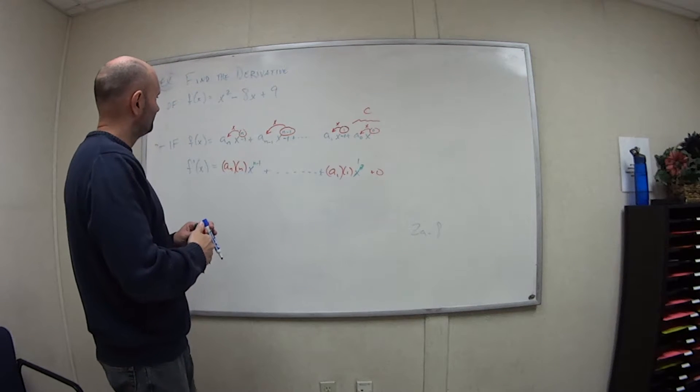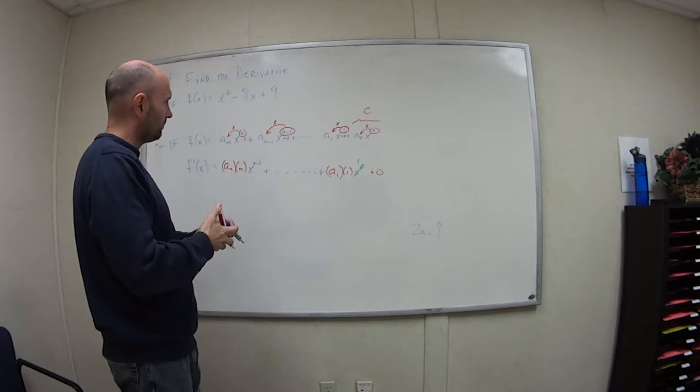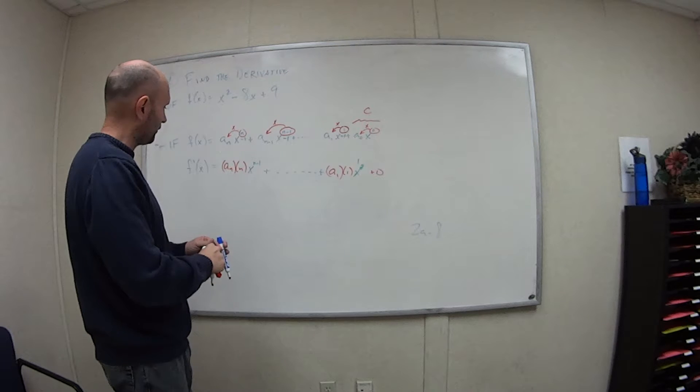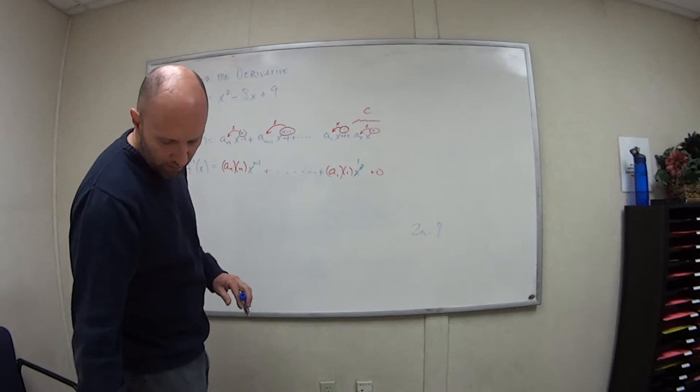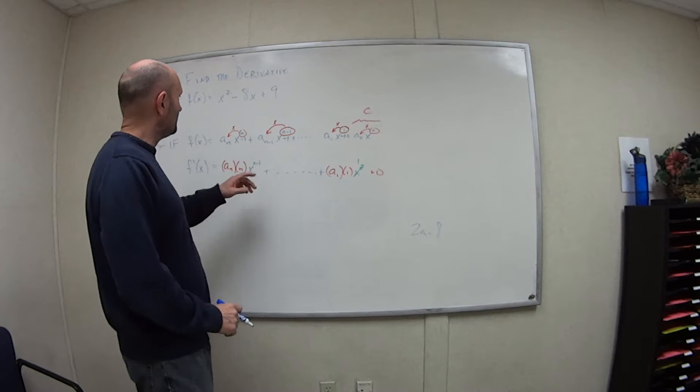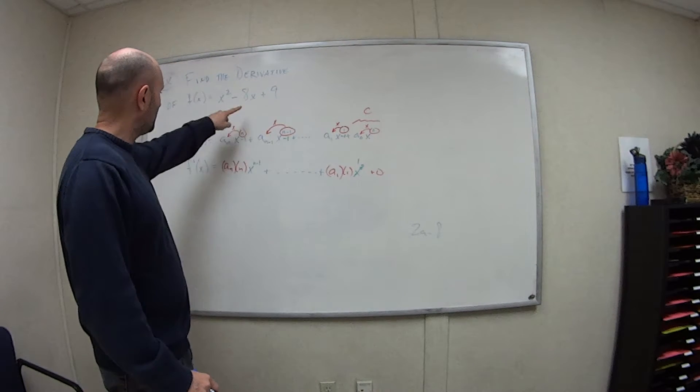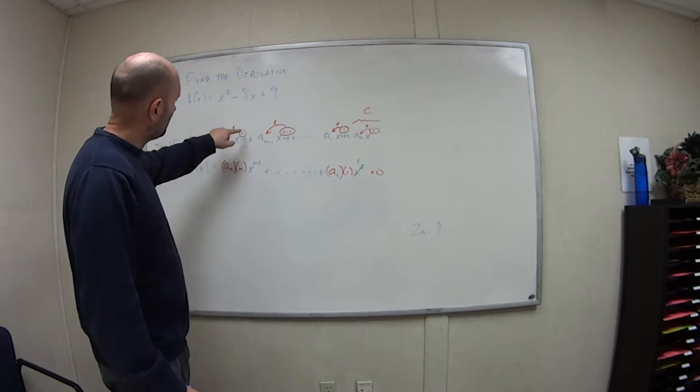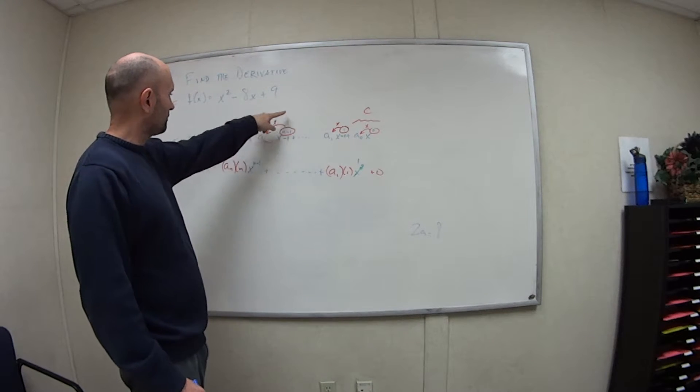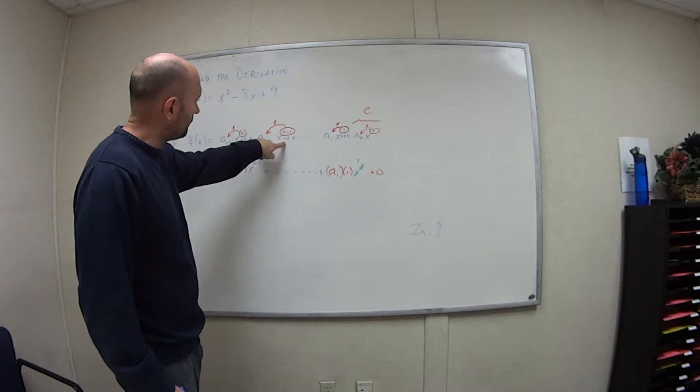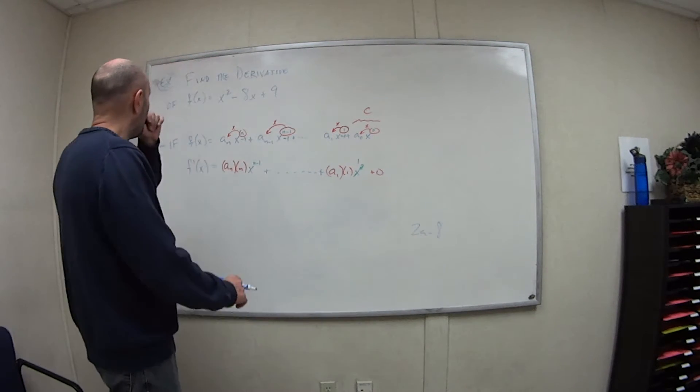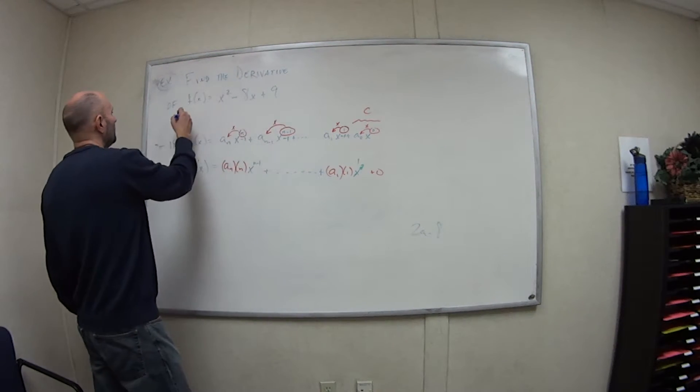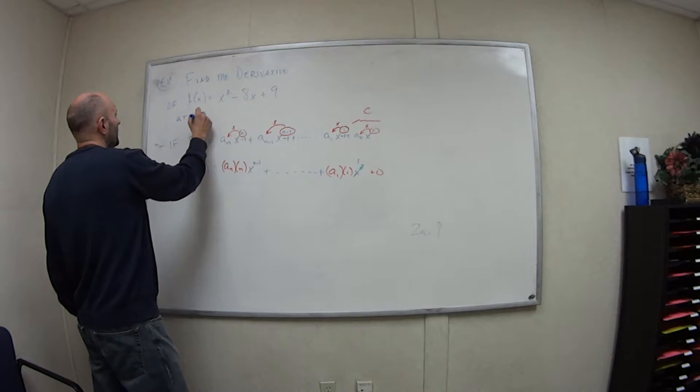So, kind of messy. That's why I use the different colors here to sort of break it apart for you. But the idea is straightforward. The idea is take the exponent, times it by the number in front, subtract 1 from the exponent. Take the exponent, times it by the number in front, subtract 1. Do that the whole way down. So now, let's find the derivative of this. Again, this was at the number a.